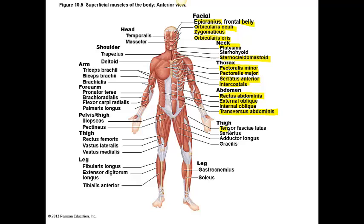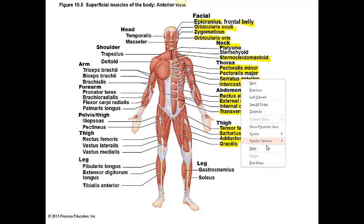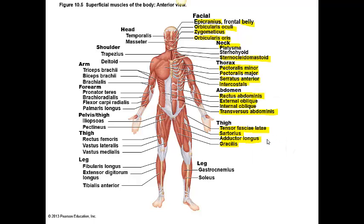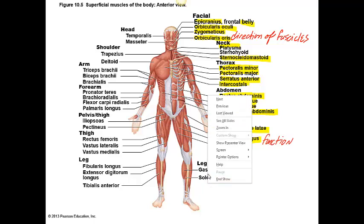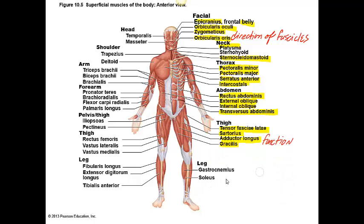In the thigh area we have the tensor fascia lata, sartorius, adductor longus, and gracilis. The adductor longus is a great example of a muscle named for its particular function. Going back to the previous lecture, recall that one of the reasons muscles are named is because of their function, and also recall the direction of the fascicles — for example, the orbicularis oculi or orbicularis oris muscles.